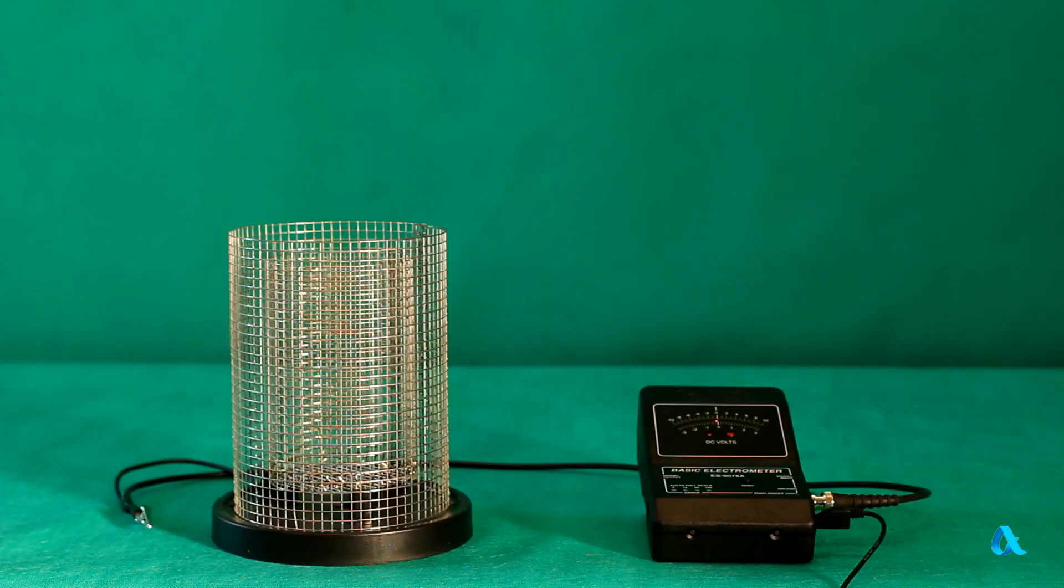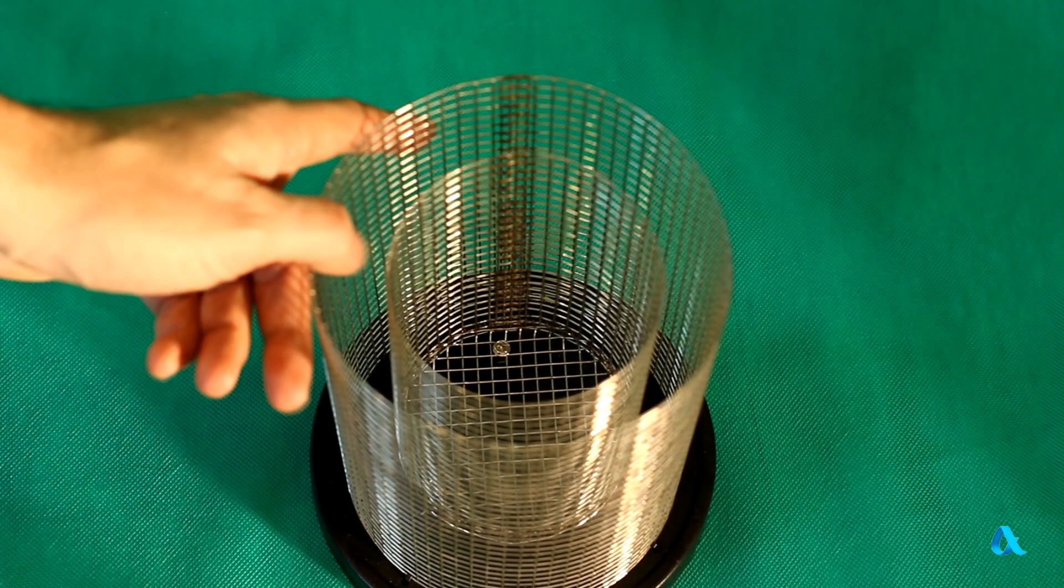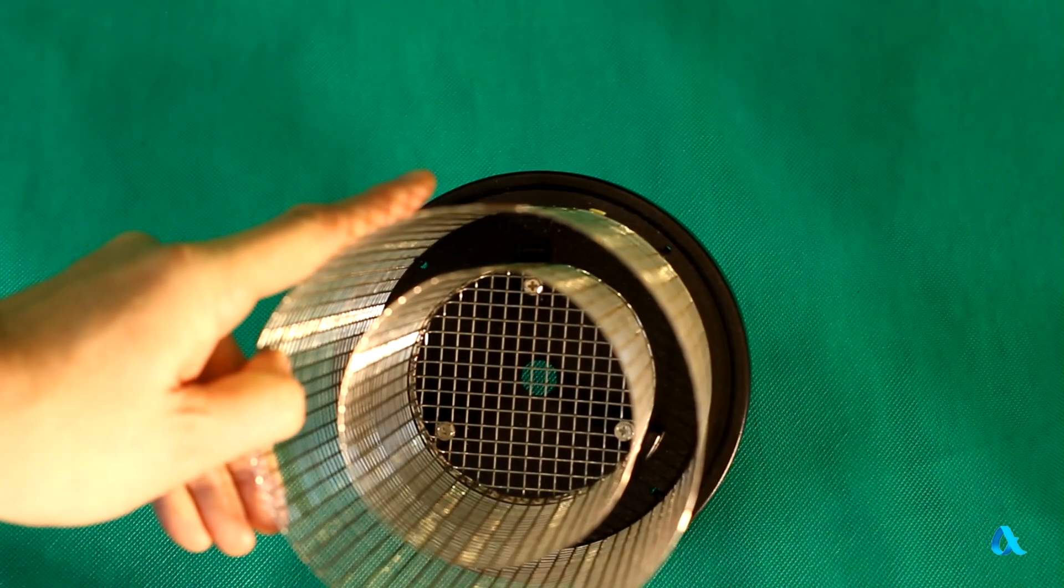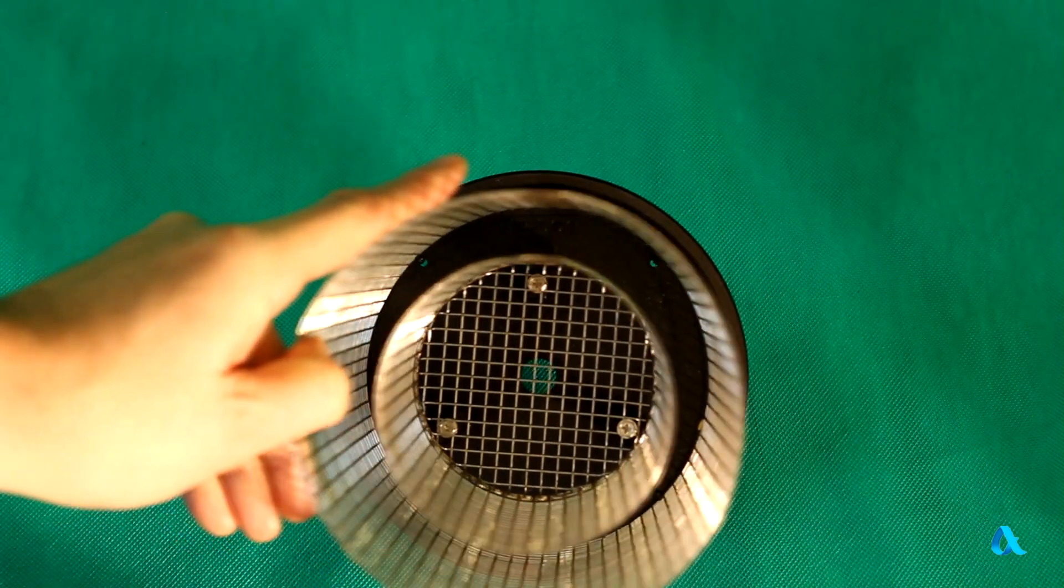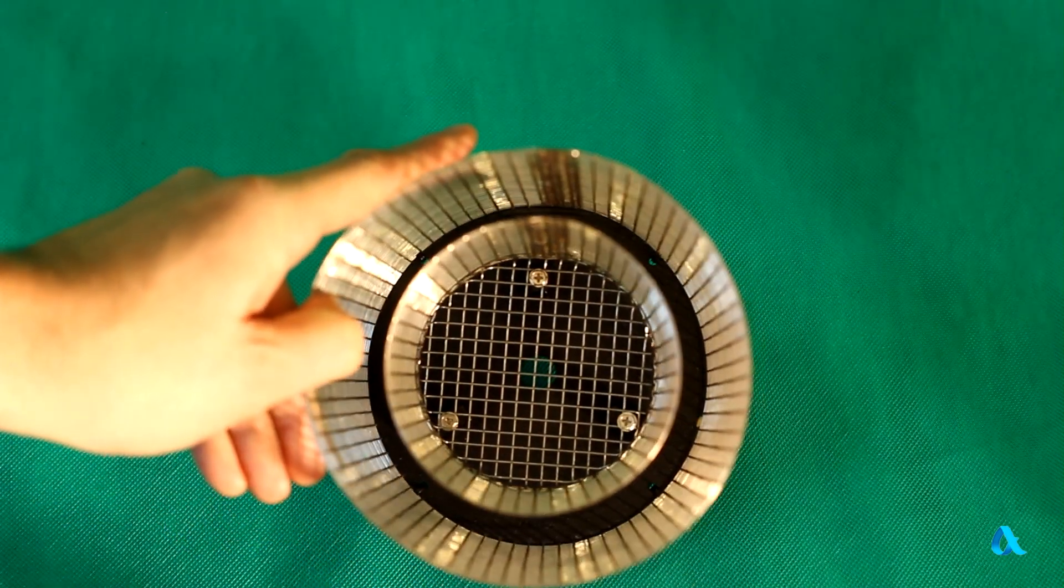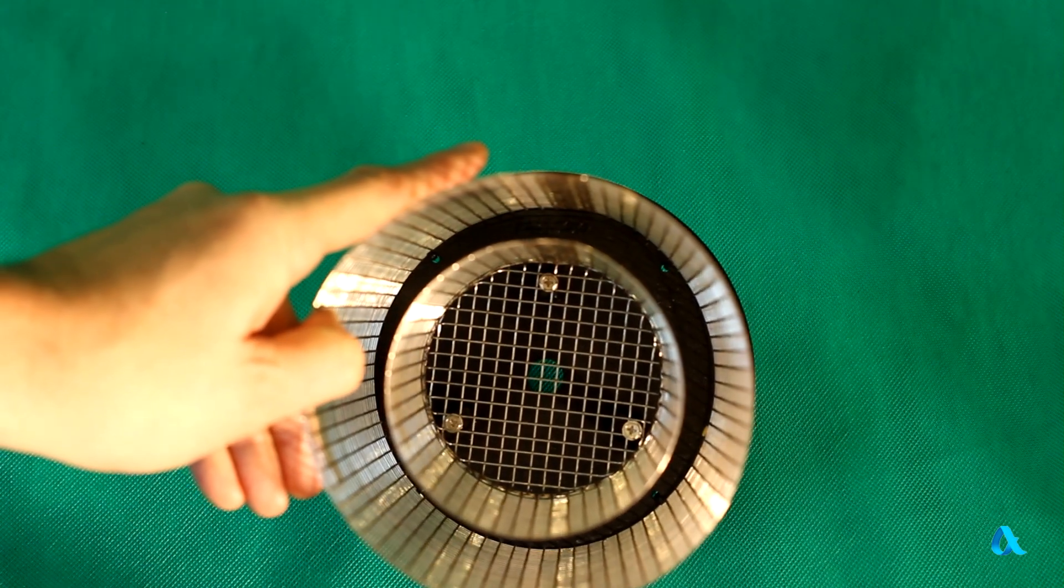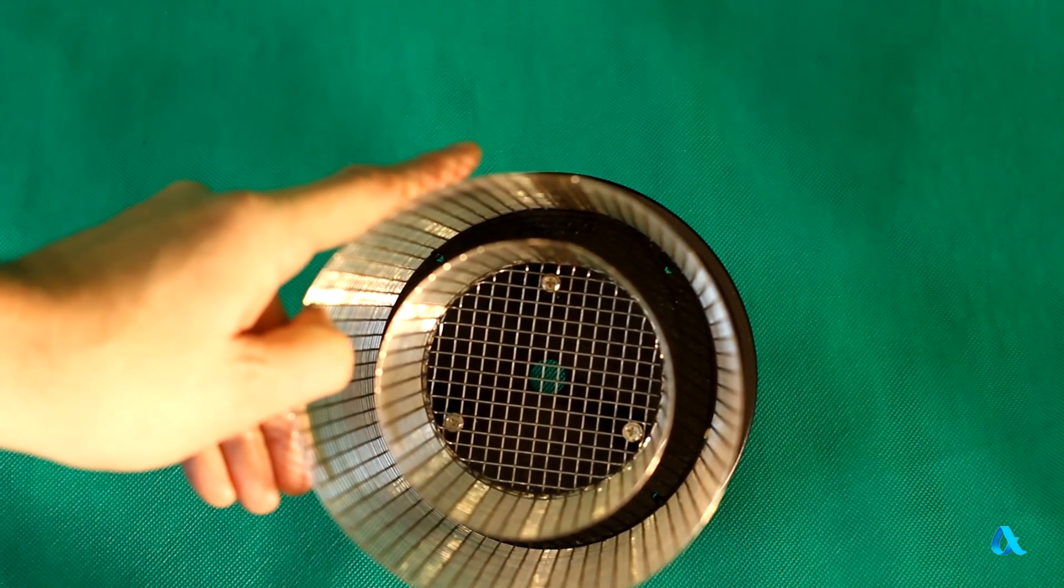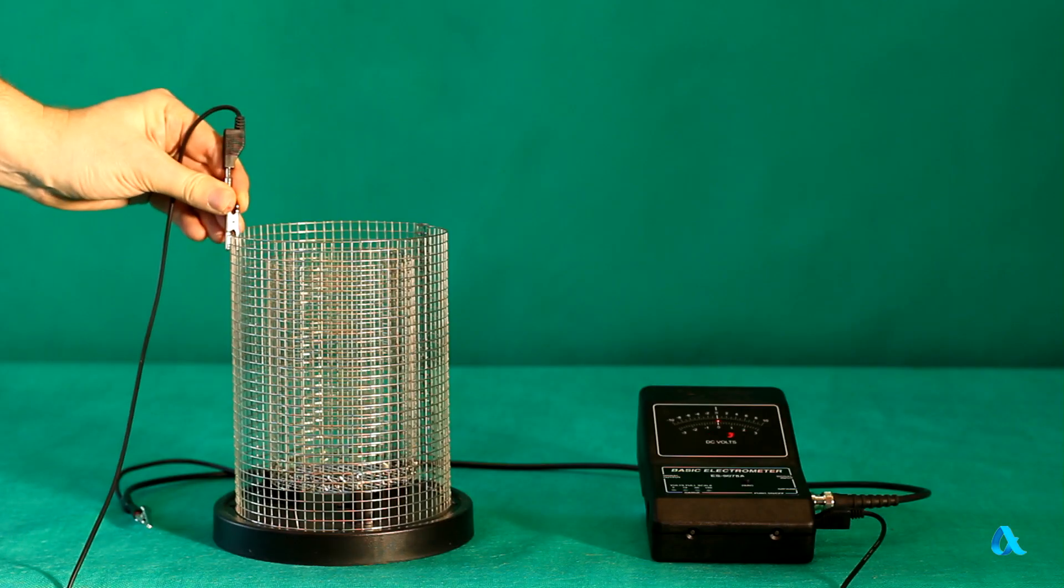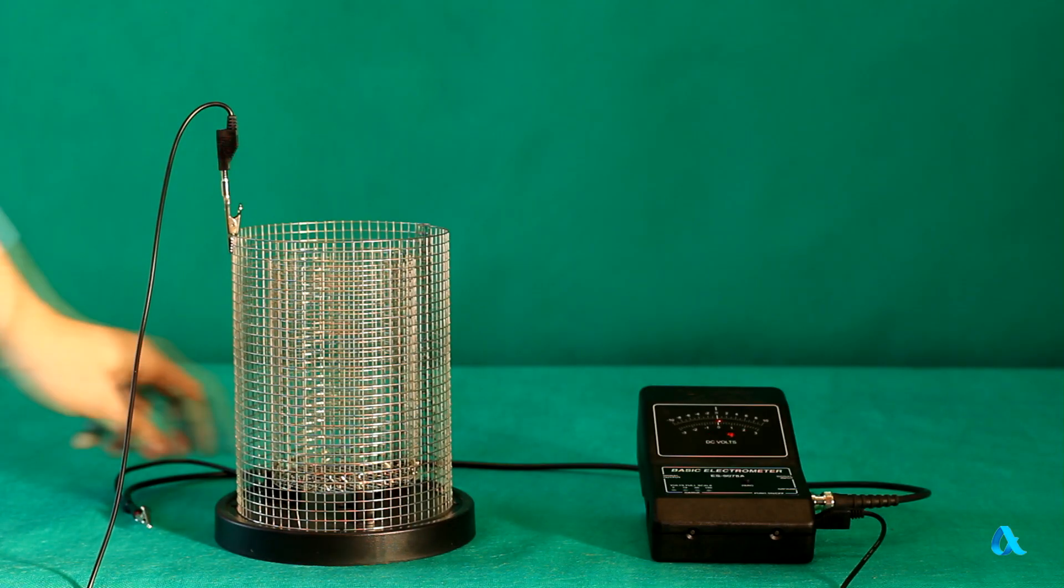This device is called Faraday Cage. It consists of two wire mesh sections installed on an isolating stand. The inner mesh is used for measuring electric charge and the outer one screens the inner mesh from the influence of extraneous electric fields. To activate the outer mesh we have to ground it.